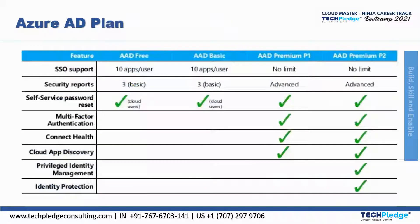Now we will see Azure AD plans. We have Azure Active Directory free plan and basic plan, which have similar features such as 10 users or apps, three basic security reports, and self-service password reset. These features are also present in AAD Premium 1 and AAD Premium 2, but AAD Premium 1 has extra features like multi-factor authentication, Connect Health, and Cloud Discovery.